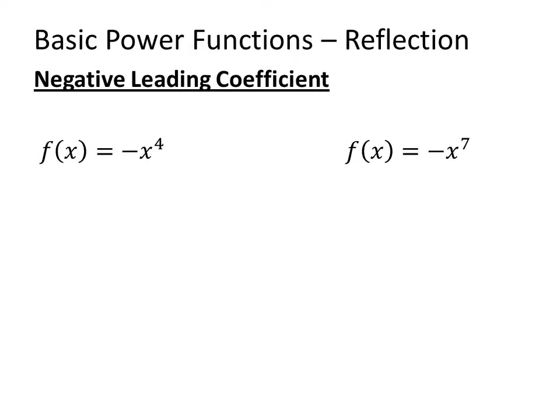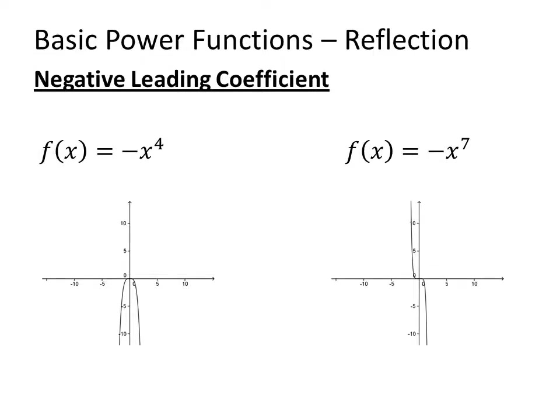Now, if we have a leading coefficient that's negative, it takes these same basic shapes and flips them across the x-axis — a reflection across the x-axis. So x to the fourth, which looks like x squared, if you took negative x to the fourth, it would open downward. f of x equals negative x to the seventh would look like x to the seventh but flipped — it starts in quadrant two and ends in quadrant four.